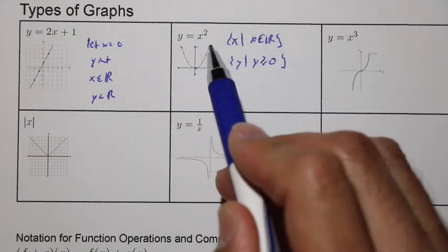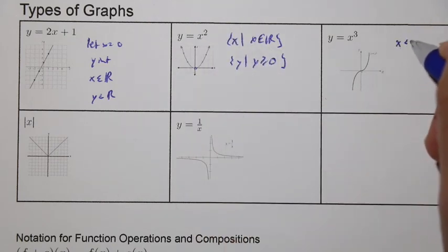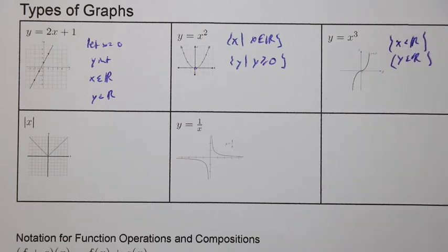You can see here with the even degree, it points in the same direction here for end behavior. For x cubed, x and y is anything. We're doing a short form of the set-builder notation here.